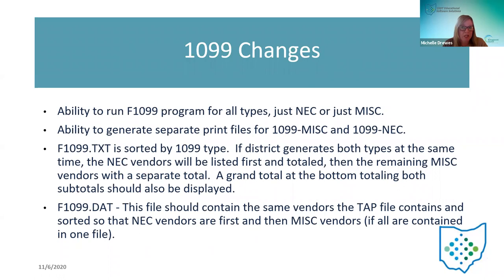Highlighting the changes in that JIRA issue: they will have the ability to run the F 1099 program for all types — including NEC and miscellaneous — or just for NEC, or just for miscellaneous. That's based on what the IRS has stated. They will have the ability to generate separate print files for the 1099 MIS and the 1099 NEC, and those will be compatible with the accountability software. We've been in touch with Edge regarding the changes — Jody is keeping Liz from Edge updated, and she has a link on the wiki with this information so Liz can test them.